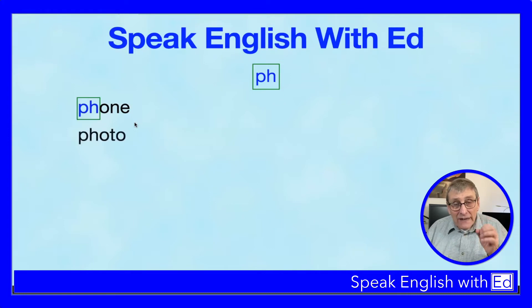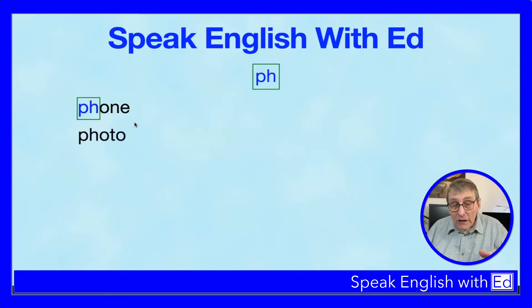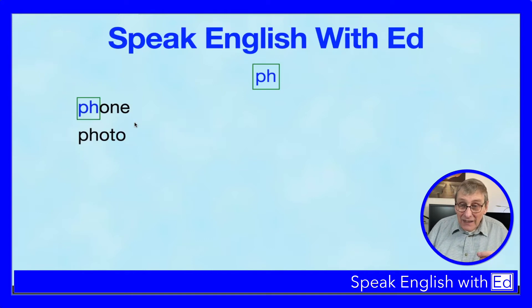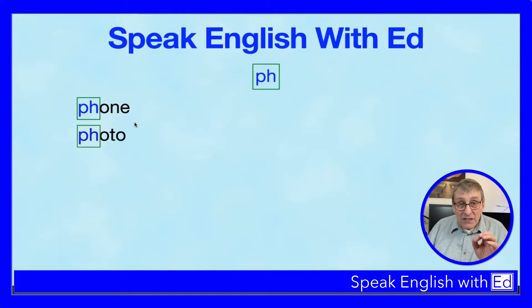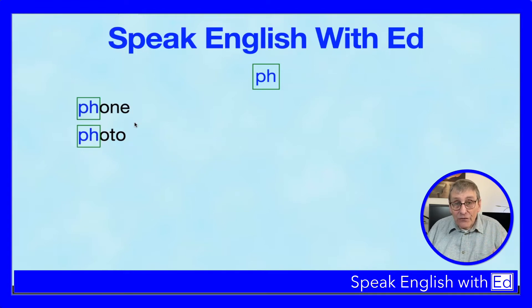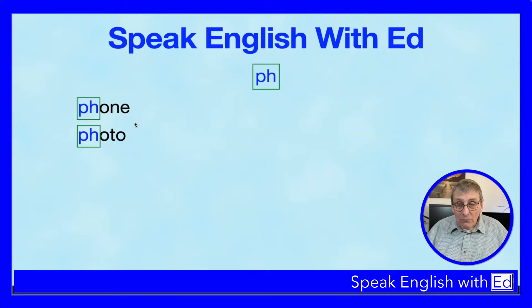Another one — you'll use your phone to take a lot of photos with. Photos: the PH is together at the beginning and it's pronounced with an F sound. Phone, photos — both start with PH, the first two letters of the word, making one single F sound.